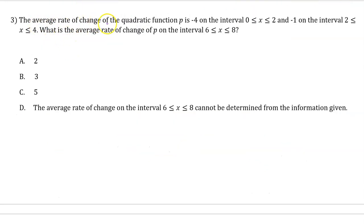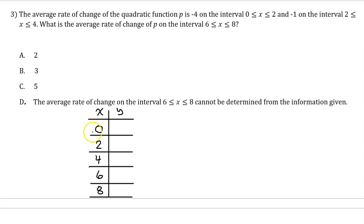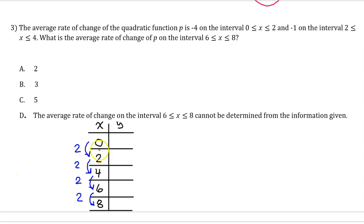Number 3. The average rate of change of the quadratic function p is negative 4 on the interval from 0 to 2, and negative 1 on the interval from 2 to 4. What is the average rate of change of p on the interval from 6 to 8? Here are all the x values mentioned: 0, 2, 4, 6, and 8. Notice that these are consecutive equal-length input value intervals.